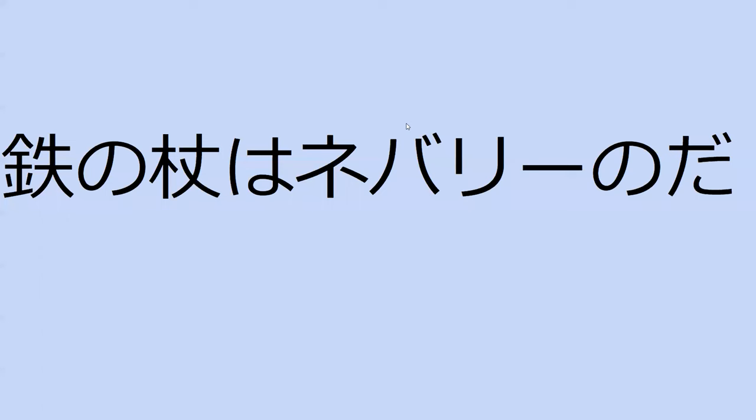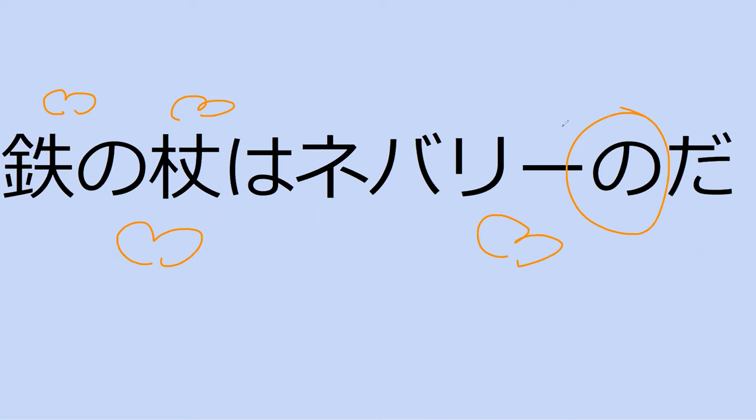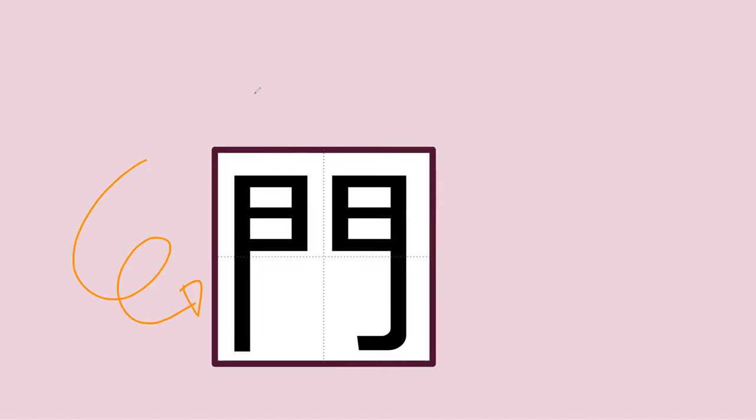Hey, what is this kanji right here? That's it, perfect. Can you read this for me? This iron cane is that of Neburi. Perfect, yep. I don't think I ever taught you the 'no' but that's exactly what it is — it means it belongs to Neburi. Do you happen to recognize this? This is a door character. It is a door character, it means gate.